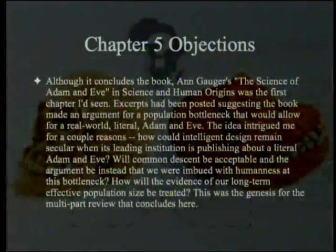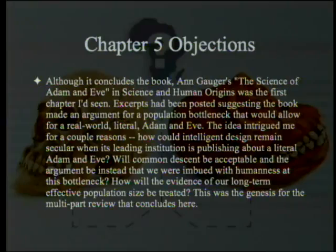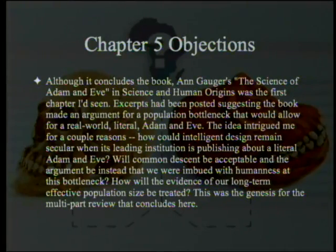Chapter 5 Objections. This will be partly Reader's Digest treatment, although this is good enough that most of the time we'll be quoting McBride in full. Although it concludes the book, The Science of Adam and Eve in Science and Human Origins was the first chapter McBride had seen. Excerpts had been posted suggesting the book made an argument for a population bottleneck that would allow for a real literal Adam and Eve.